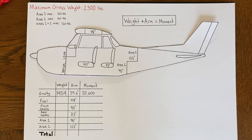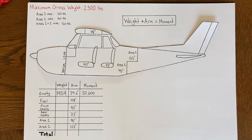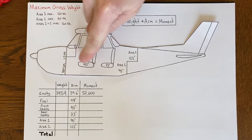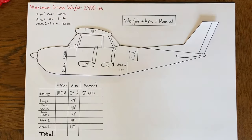We need to calculate where the center of gravity is, considering all the weight in the airplane, and check that it's within the allowable limits. The key equation for weight and balance is: weight times arm equals moment. The arm is the location measured from the datum line of a particular station. For the front seats, it's 40 inches behind the datum line. For the fuel tank, it's 48 inches behind the datum line. Moments are tilting forces.